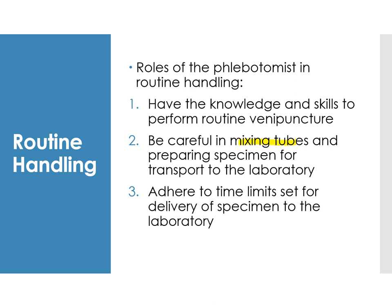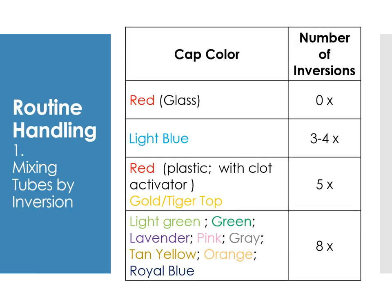As previously discussed, each tube has a different required number of inversions depending on the additive or anticoagulant present. Red glass tubes require no inversions. Light blue tubes require 3 to 4 inversions. Red plastic tubes — which have a clot activator — along with gold or tiger top tubes require 5 inversions. Light green, green, lavender, pink, gray, tan, yellow, orange, and royal blue tubes all require 8 inversions.